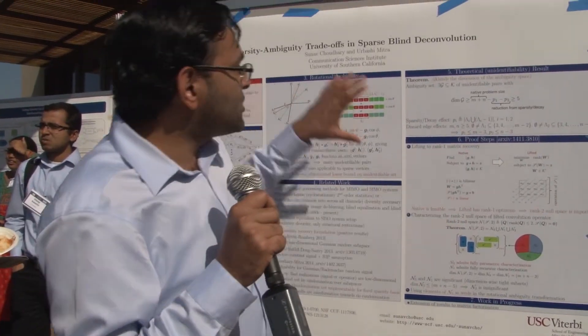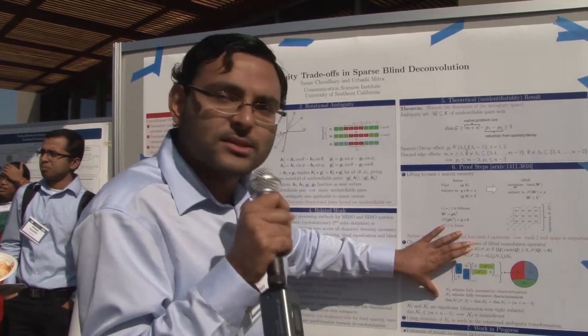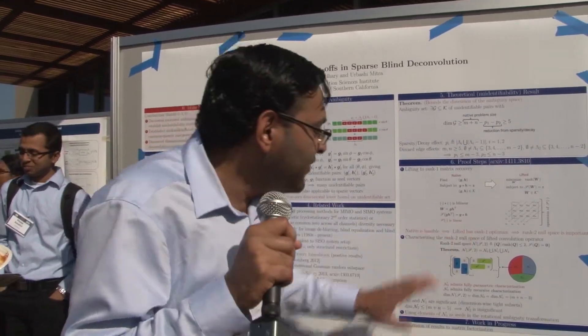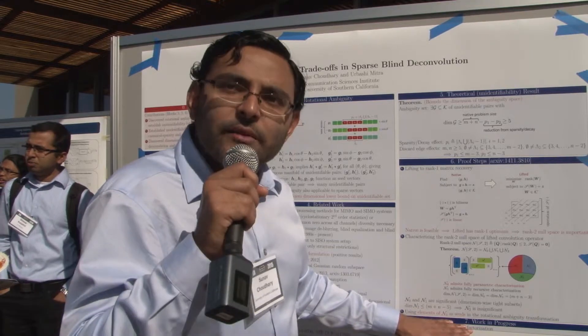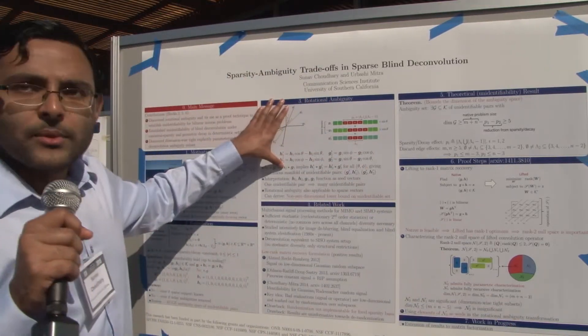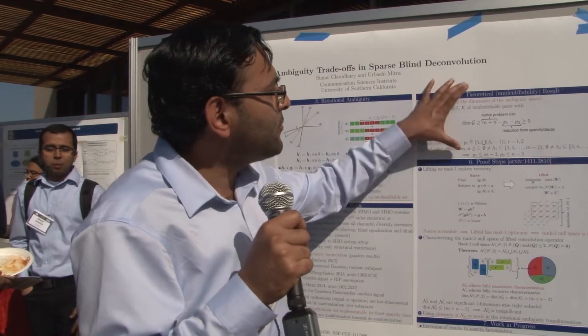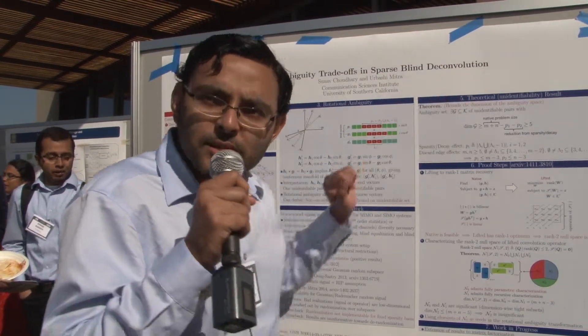But because this rotational ambiguity goes through for sparse vectors, we can use this characterization and feed it as seed vectors into this rotational ambiguity transform. The result of that is you get this dimensional lower bound.